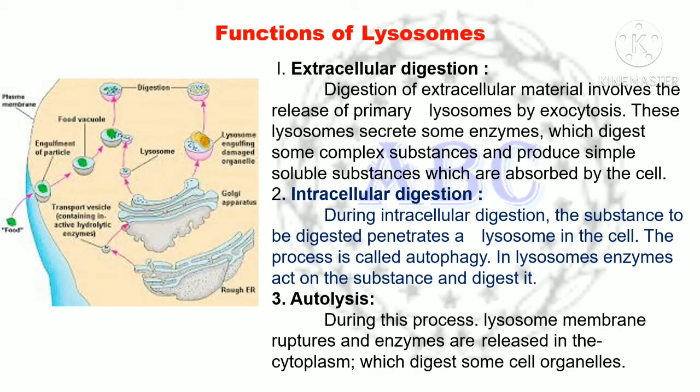The functions of lysosomes are as follows. The first important function is extracellular digestion. Digestion of extracellular material involves the release of primary lysosomes by exocytosis. These lysosomes secrete enzymes which digest complex substances and produce simple soluble substances that are absorbed by the cell.